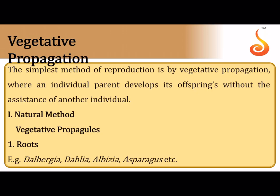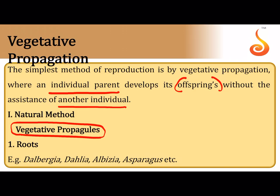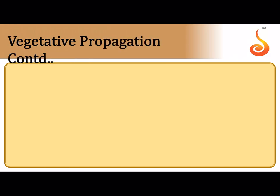In vegetative propagation, an individual parent plant develops into an offspring without the assistance of another individual. Specific organs called vegetative propagules take part in formation of new plants. For example, roots giving rise to new plants by bud formation are vegetative propagules, as in dalbergia, dahlia, albizia, and asparagus.